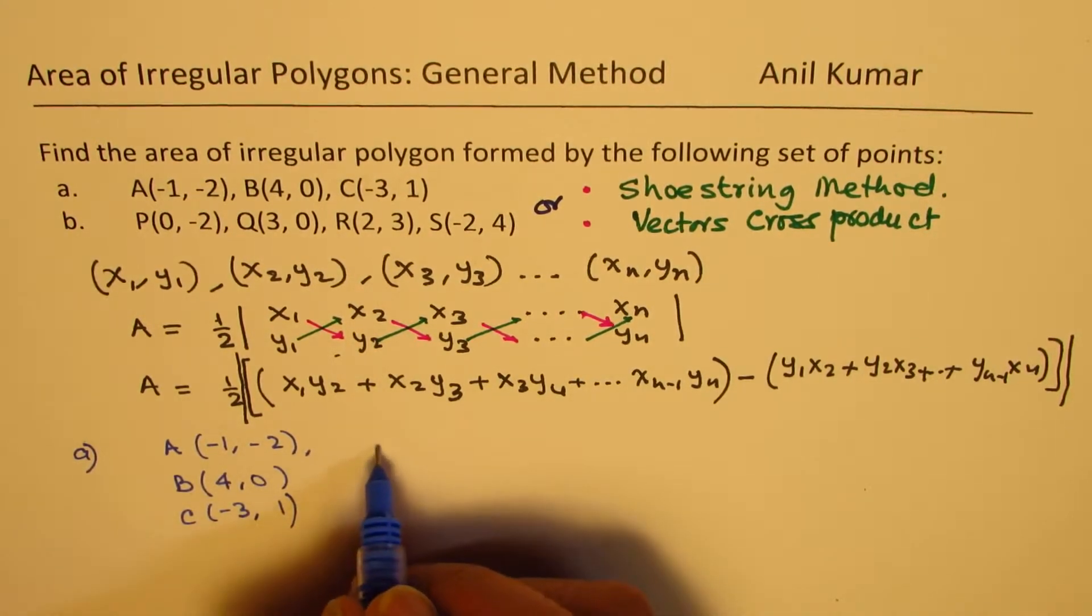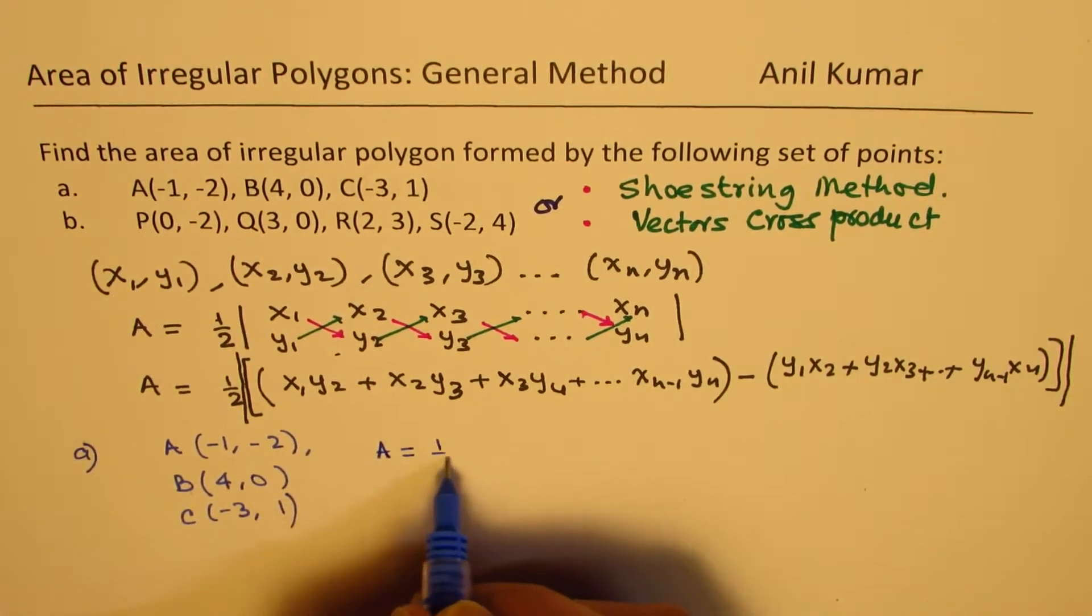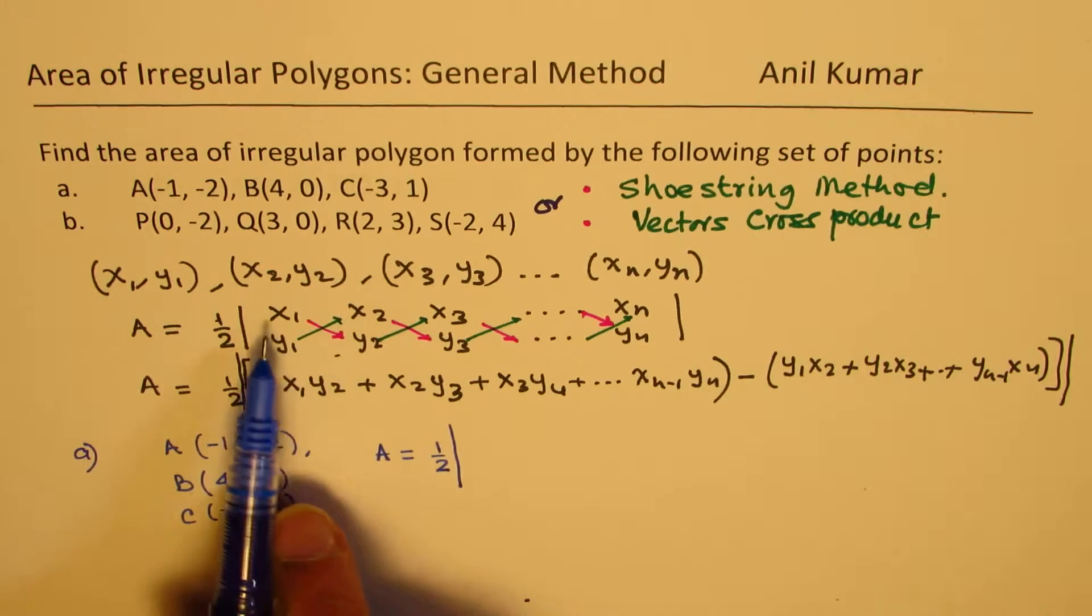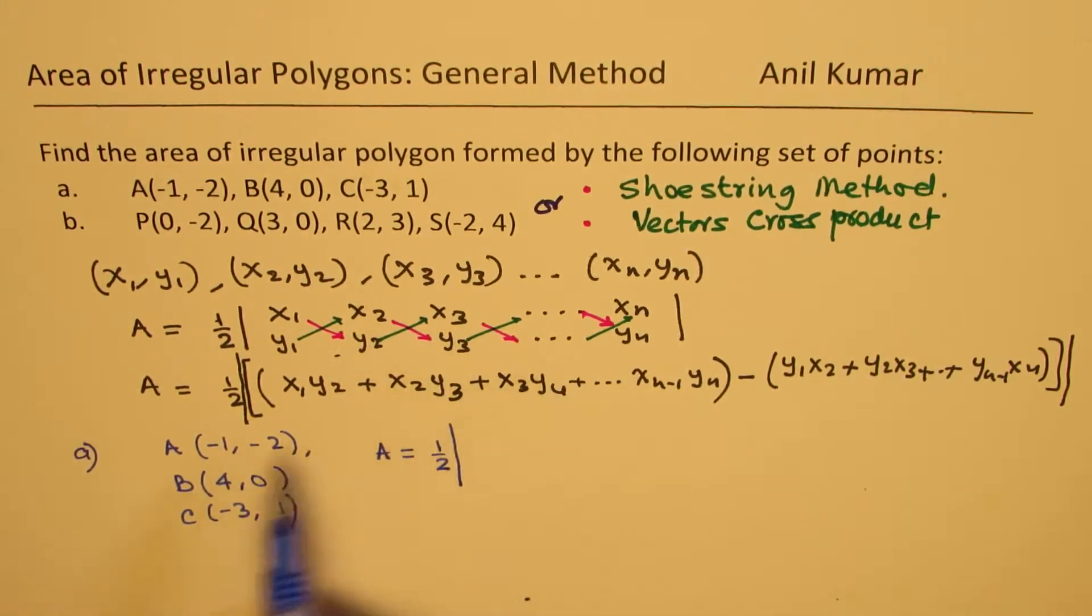Now, to find this area, we can say area is equal to half of absolute value of... It's a good idea to write it in this fashion, and then multiply. We have to multiply this x value with the y value, this x value with the y value. These will be positive in nature.